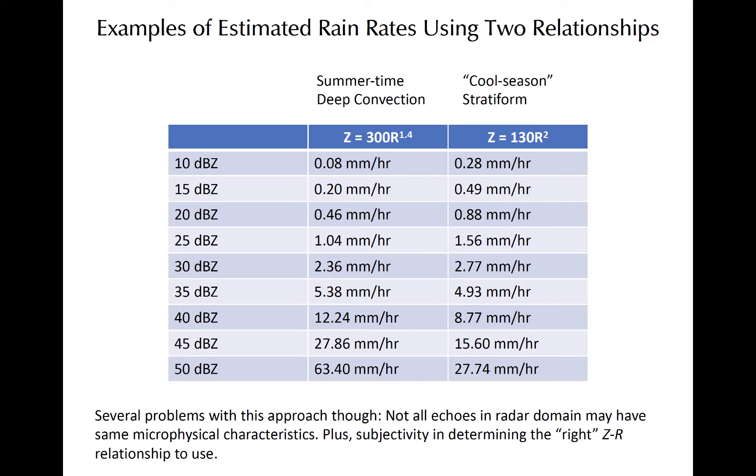We'll start by looking at the simple Z-R relationships in more detail first. The table shows how rain rate in millimeters per hour increases for increasing reflectivity. That increase differs dependent upon the type of convection present, which is what these two columns are.